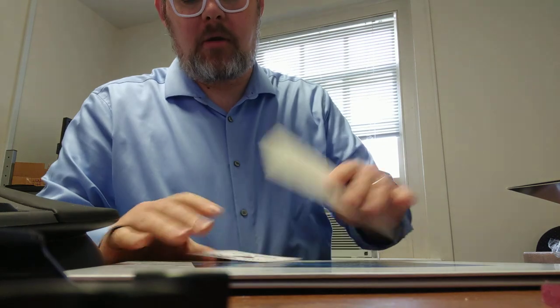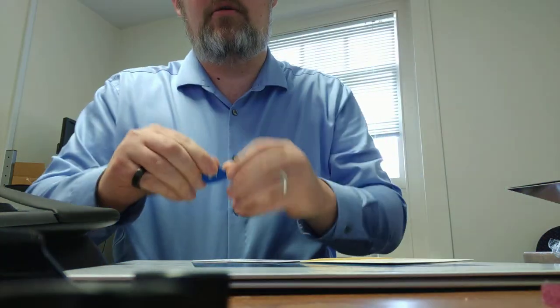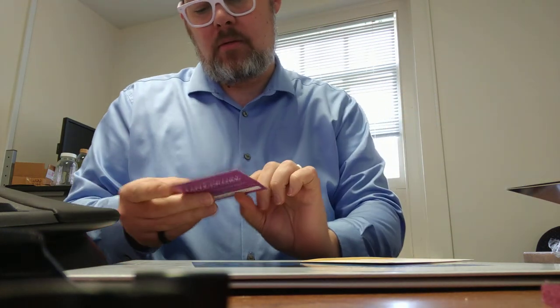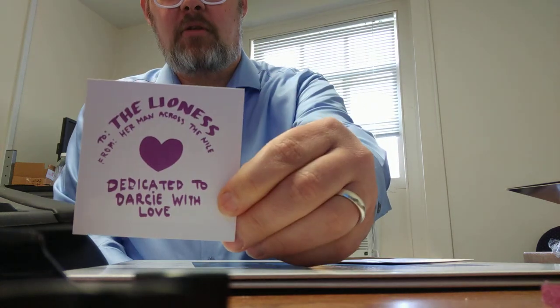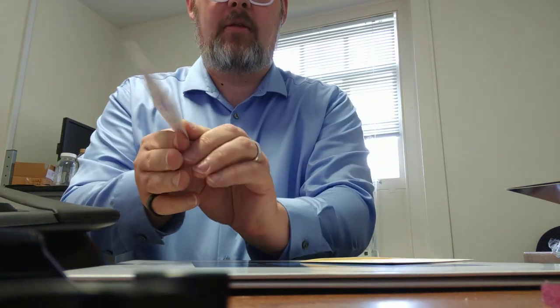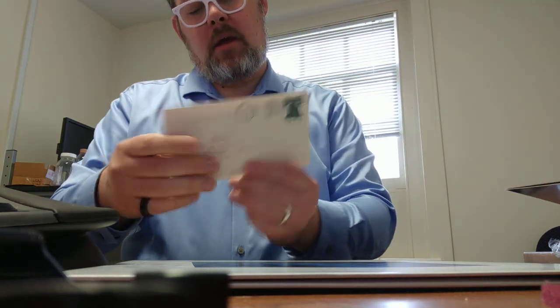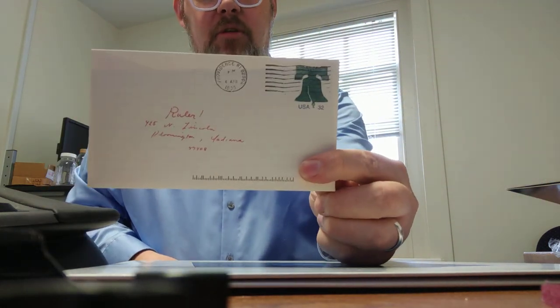Couple more little things here. Guitar pick. A little note to Darcy that also acts as download code. And a letter, a reproduction of the letter, I assume from Jason to Darcy.